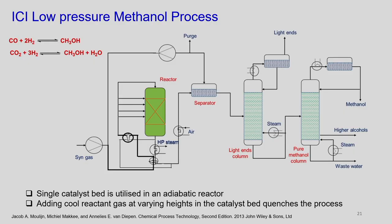The new process is the ICI low-pressure methanol process. A single catalyst bed is utilized in an adiabatic reactor, and cool reactant gas (syngas) is added at varying heights in the catalyst bed, quenching the process. This syngas takes heat from the effluent stream coming from outside. Two reactions occur: CO + H2 → methanol, and syngas → ethanol + water.